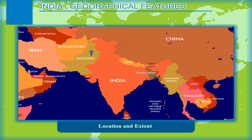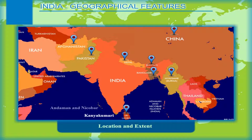India shares its land frontier with Pakistan and Afghanistan towards the northwest. China, Nepal and Bhutan lie towards the north, and Myanmar and Bangladesh share the land borders towards the northeast and east. Sri Lanka, lying in the Indian Ocean, is connected to India by the Palk Strait. Kanyakumari is the southernmost tip of the mainland of India, whereas Indira Point in the Andaman and Nicobar Islands forms the southernmost point of India as a whole.